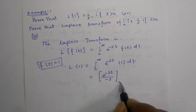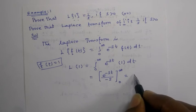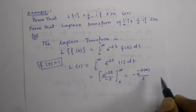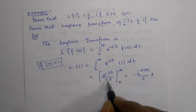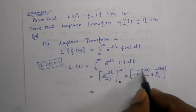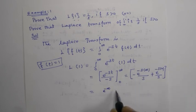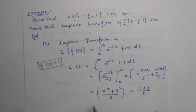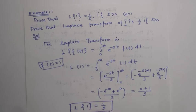Applying the limits from 0 to infinity, we get: minus e to the power minus s t into infinity divided by s, plus e to the power minus s into 0 divided by s. Evaluating: e to the power minus infinity is 0, and e to the power 0 is 1, divided by s. Therefore the result is 1 divided by s.